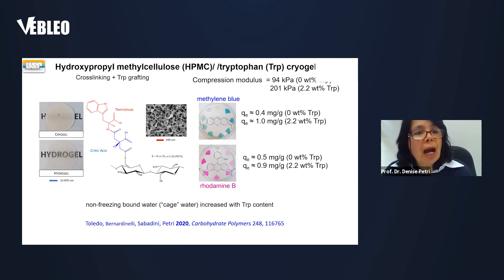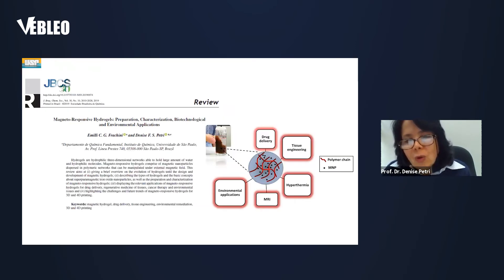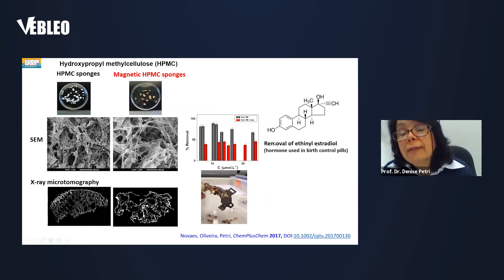We can also make magneto-responsive hydrogels. They are very interesting because you can remove them by approaching a magnet. After removing the pollutants, they can be easily removed by a magnet. But it can also be used for drug delivery and tissue engineering. In this case, we have the sponges of HPMC and you see here that we have a hierarchical porous structure, very small pores, intermediate and large pores. And it was very nice to remove ethinylestradiol, which is a pollutant.